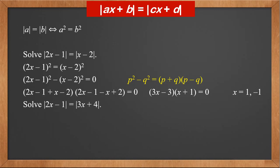Here's another example. Solve the modulus of two x minus one equals the modulus of three x plus four. Squaring both sides, we get two x minus one squared equals three x plus four squared.